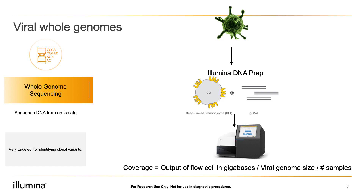That being said, viral whole genome sequencing is very easy. You isolate the virus, extract its DNA or RNA and make cDNA, and then make a library — typically using Illumina DNA Prep, or for a virus with high GC or repetitive genome sequences, maybe the Illumina DNA PCR-Free Prep. These library prep methods can be done by anyone with basic lab pipetting skills in less than three hours, and they don't require much special equipment.